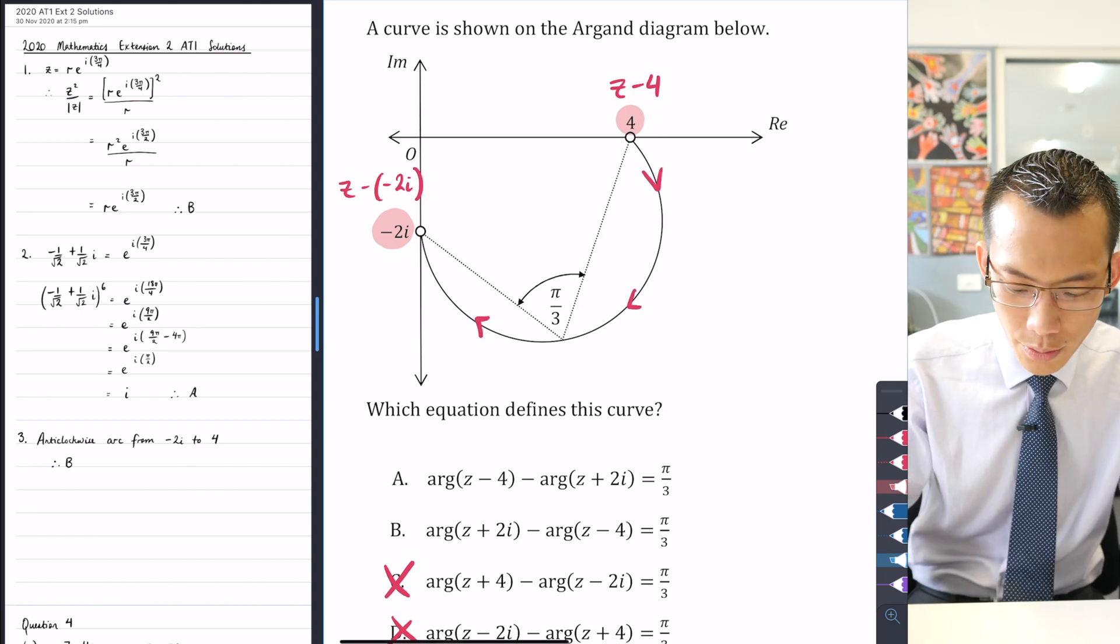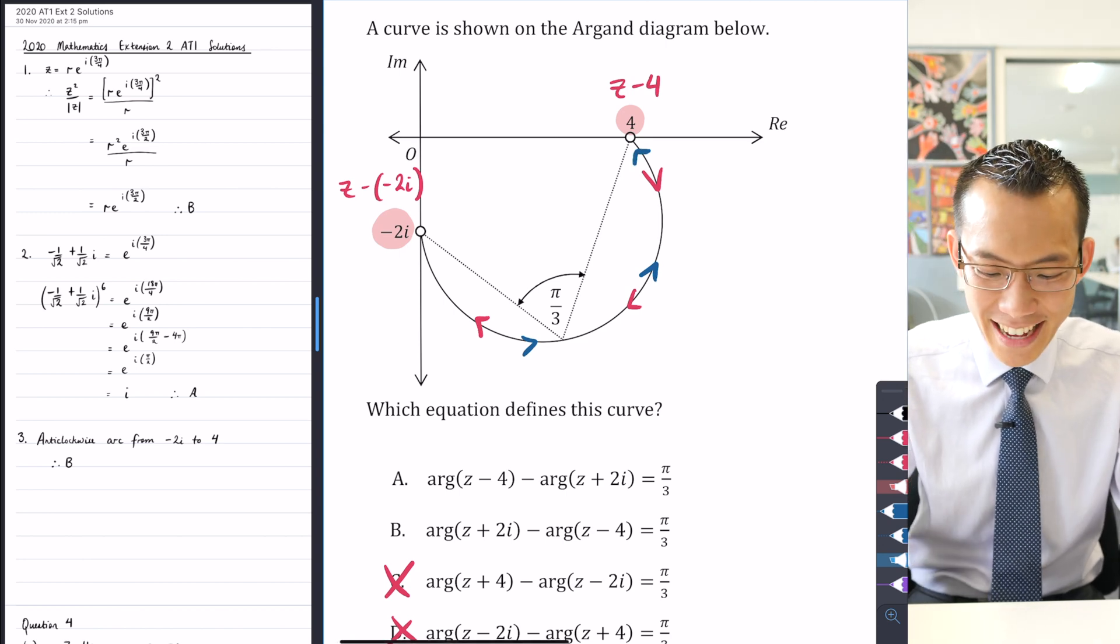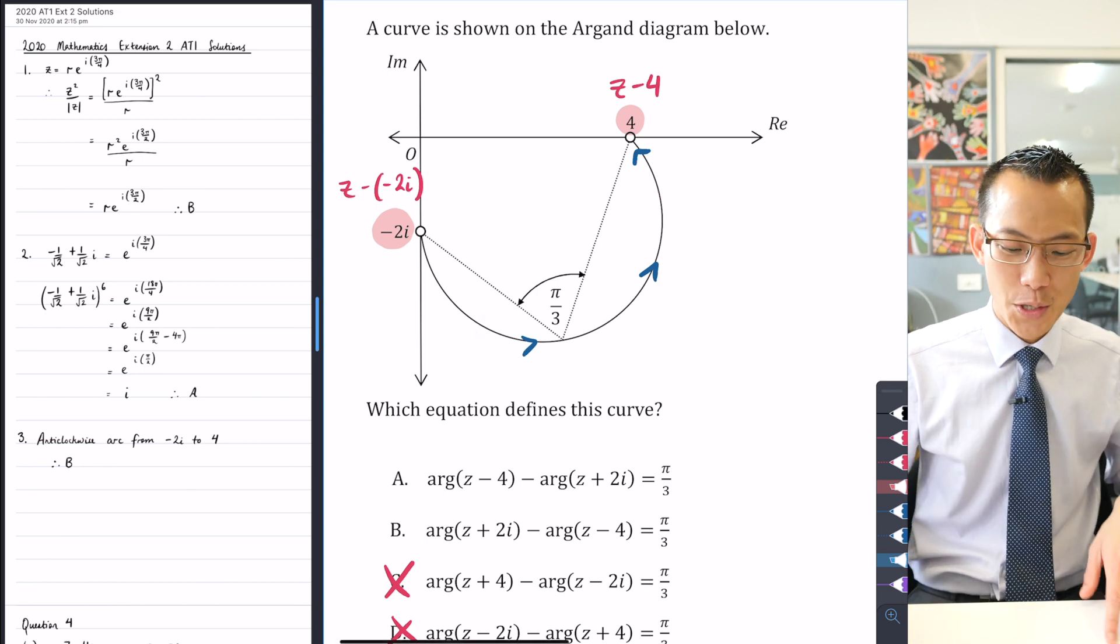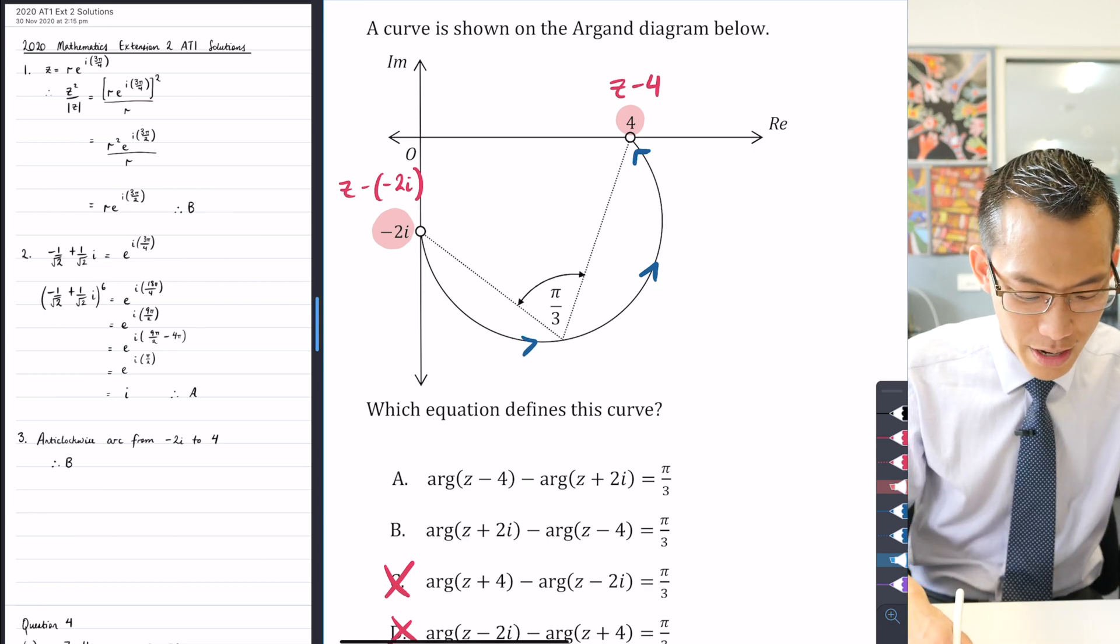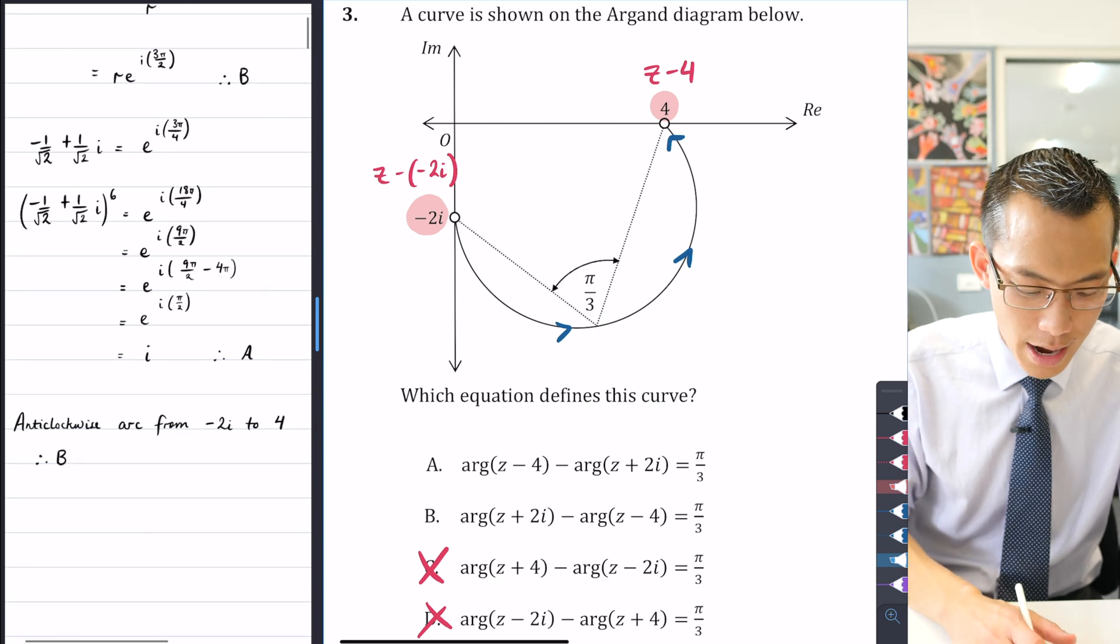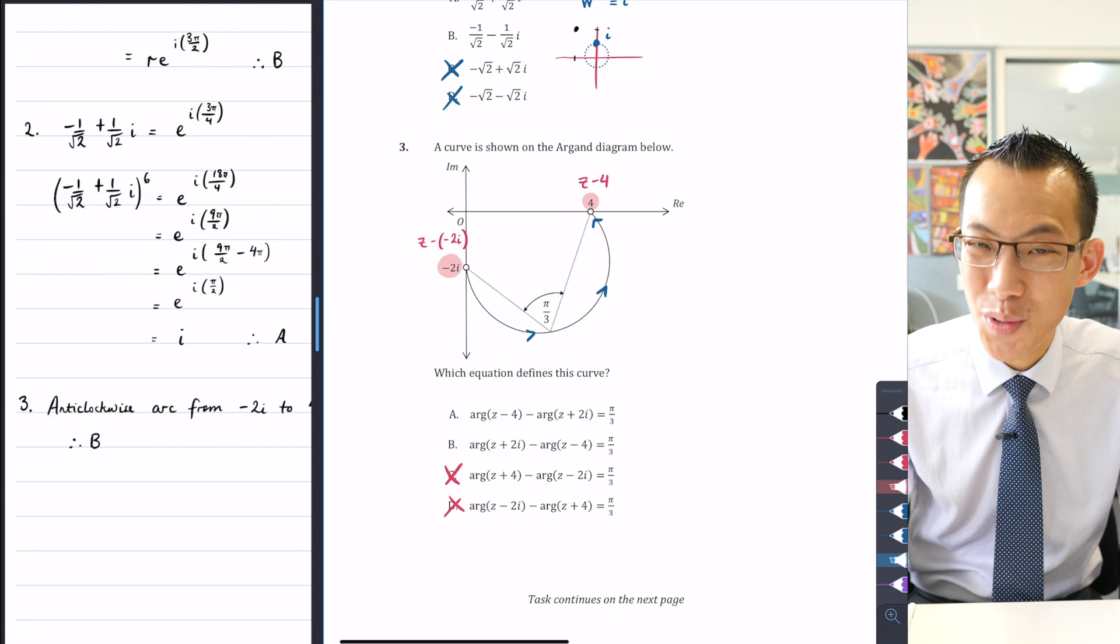You can see I need to count or measure my angles anticlockwise from a start point to an end point. So is it anticlockwise to go in this direction, or is it anticlockwise to go in this direction? If you think carefully about the direction that a clock goes in, it's clearly going to be the blue direction. So get rid of these red arrows. I have to start from -2i, then I've got to go to 4. And that's why you can see I've written anticlockwise from -2i to 4, and that's option B. So that's all the multiple choice questions. Let's now dive into the extended response.